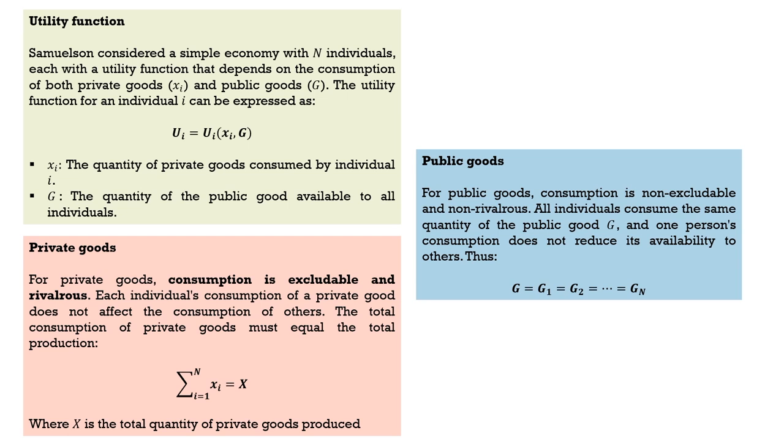We can explain public and private goods with standard utility functions. Samuelson considered a simple economy with n individuals, each having a utility function depending on consumption of both private goods and public goods. As individuals, we consume private goods such as a mobile phone, a book, a computer, television, food, housing, transport, and public goods such as a primary school, primary health care center, public roads, and public parks.